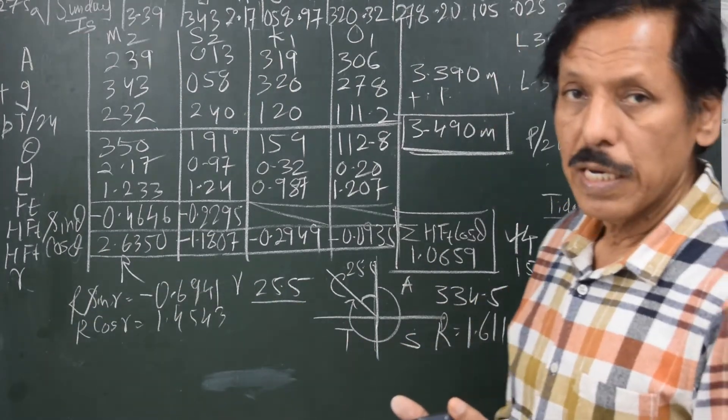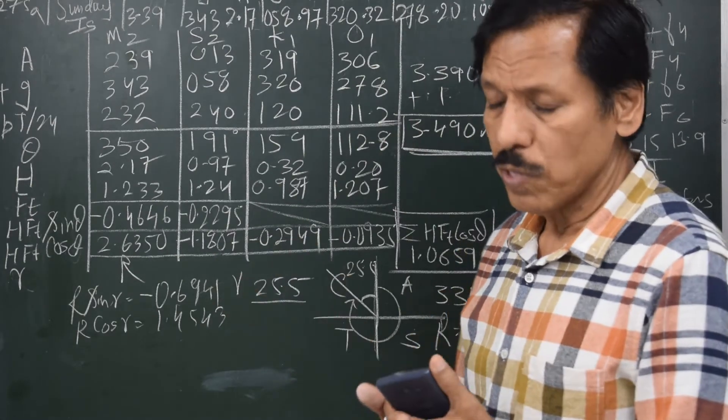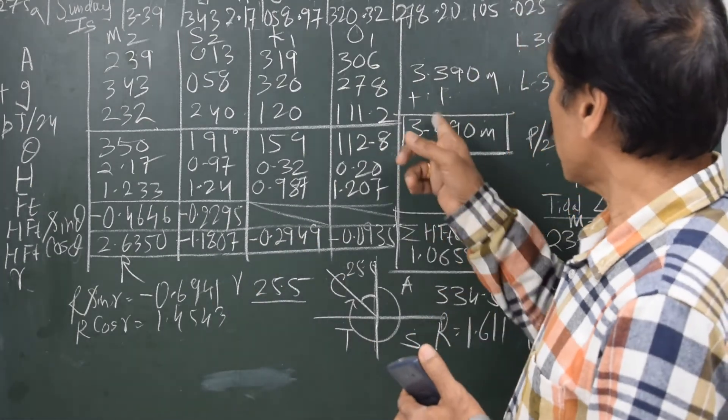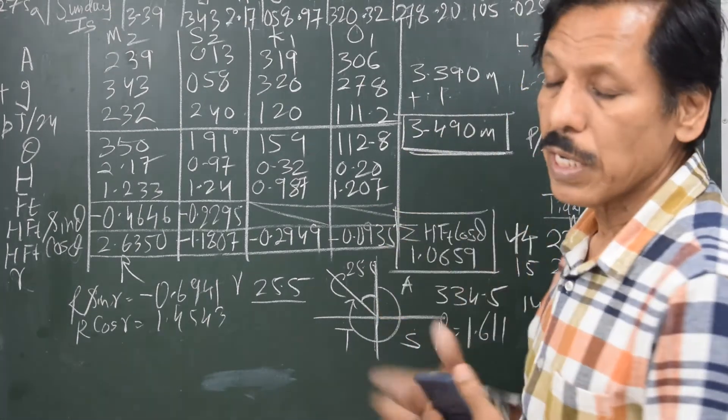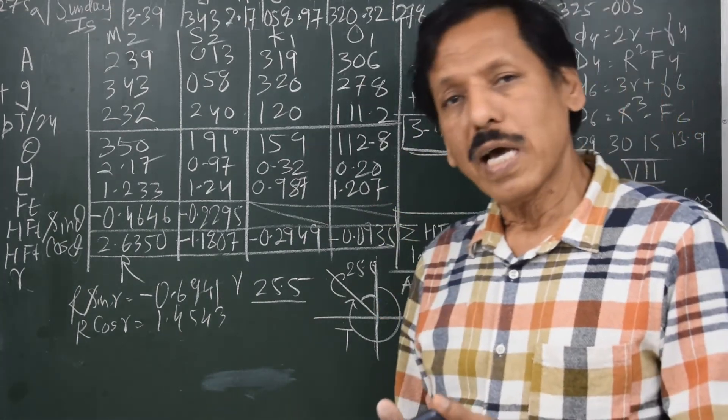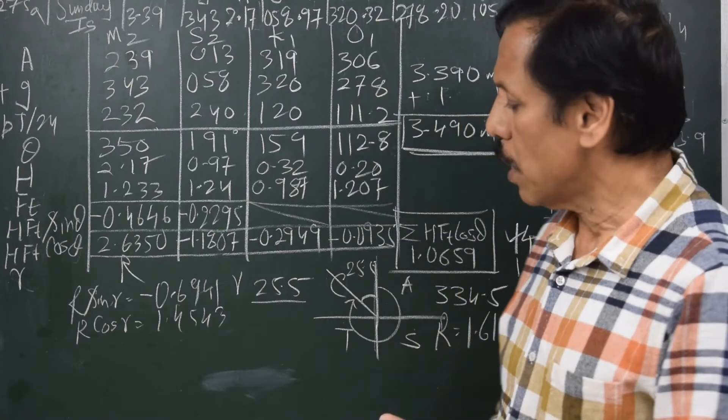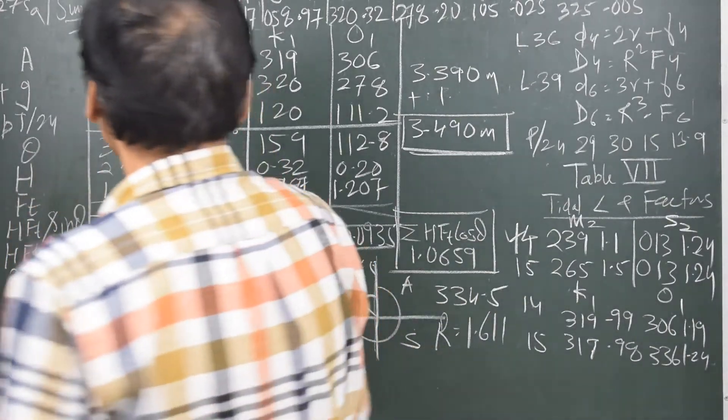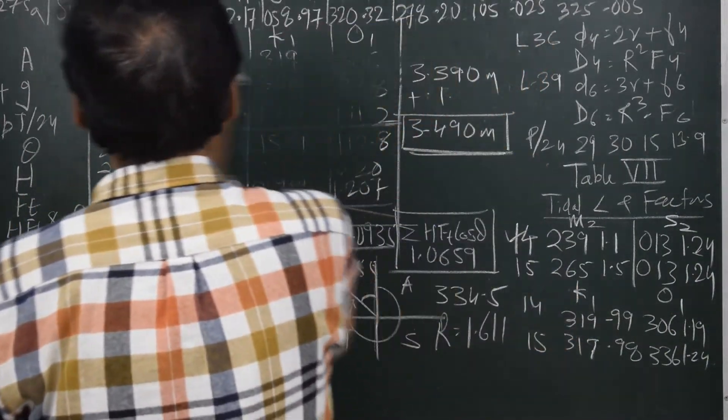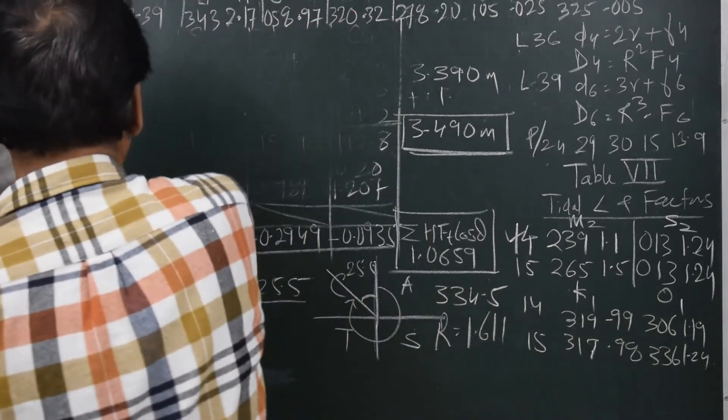Actually, in simple harmonic tide calculations there are four things to be found out: Z0 with seasonal correction is number one, sigma HFT cos theta is number two, quarter diurnal correction is number three, and one-sixth diurnal correction is number four. So let's gear up for the second part of the calculations. I'll use this space for doing the calculations.